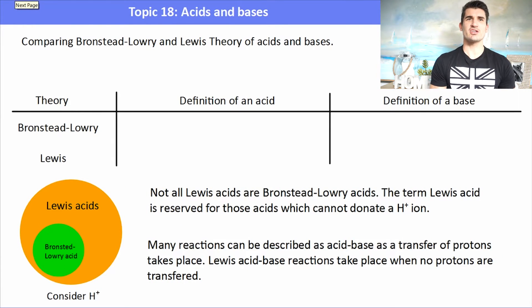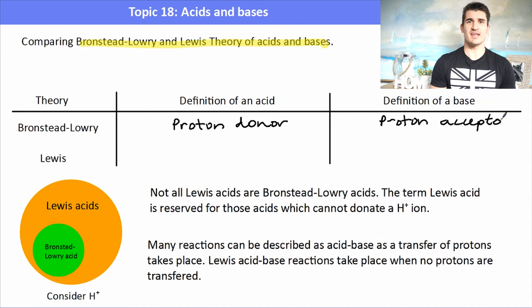Now if we're asked to compare Bronsted-Lowry and Lewis theory of acids and bases, then what we need to do is compare both of the theories. So Bronsted-Lowry acid is a proton donor, a Bronsted-Lowry base is a proton acceptor. A Lewis acid is an electron receiver and a Lewis base is an electron donor. So they're kind of the opposite of each other, except instead of talking about protons we need to talk about electrons.